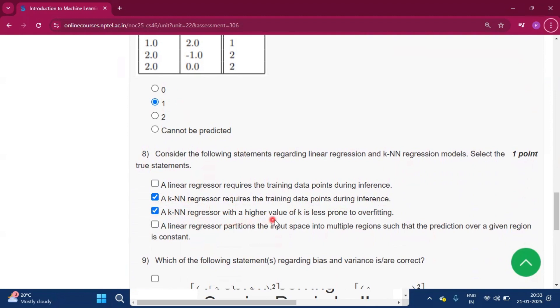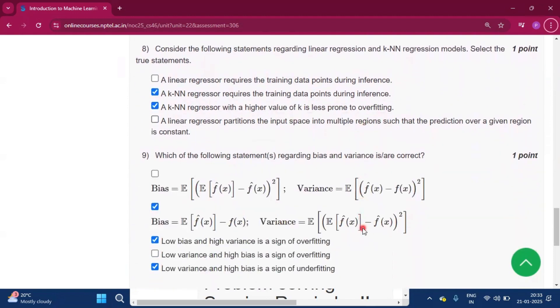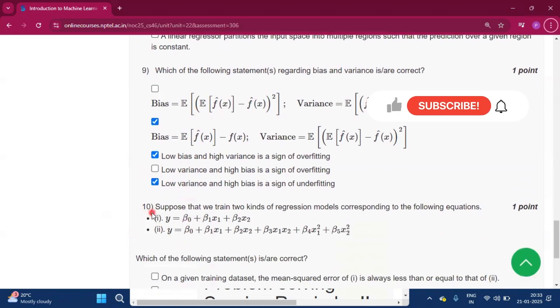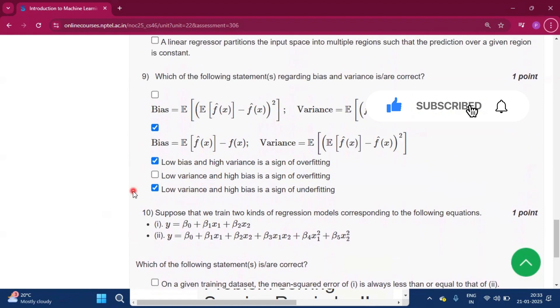Now question number eight, the answer will be: a k-NN regression requires the training data points during inference, and a k-NN regression with a higher value of k is less prone to overfitting. Now for question number nine the answer is this three. Please subscribe my channel if you get some help from this video.